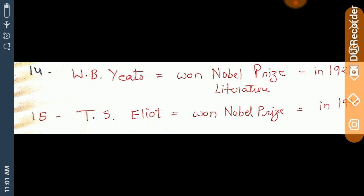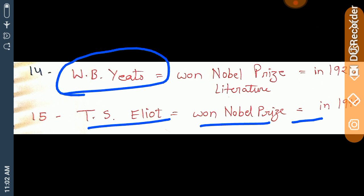In 1948, the Nobel Prize for Literature was awarded. This is an important point about the Nobel Prize for Literature, which we are discussing in today's lesson.